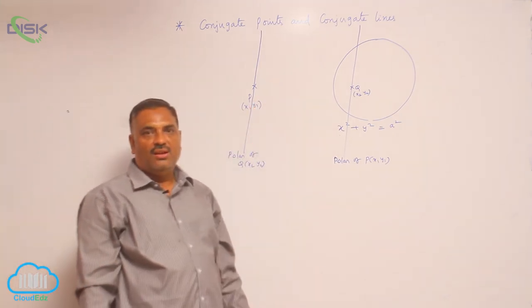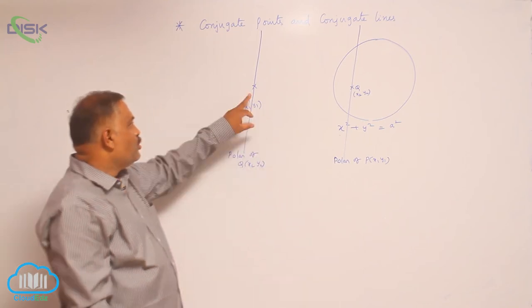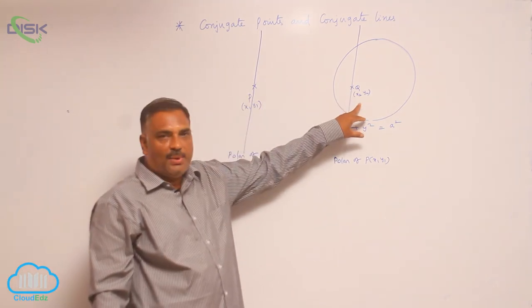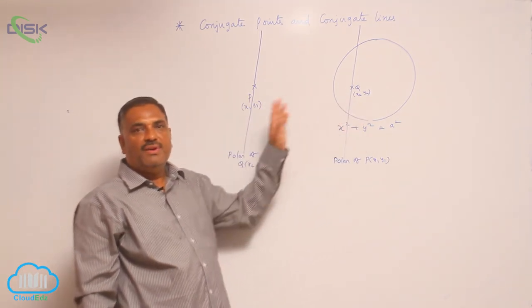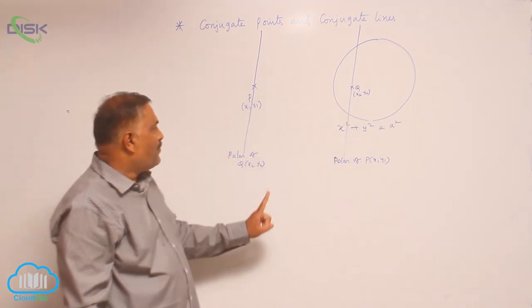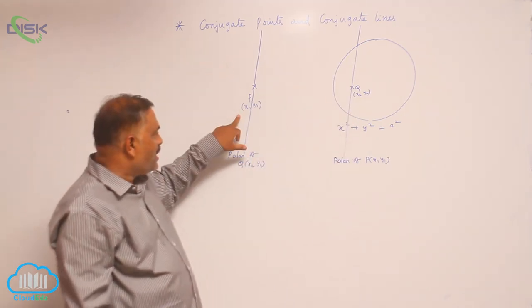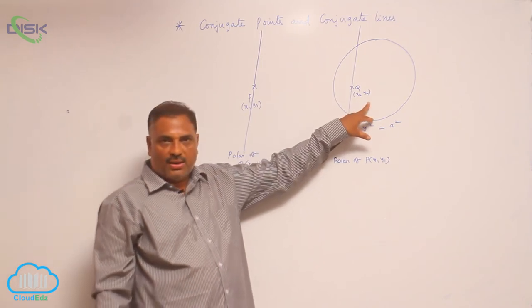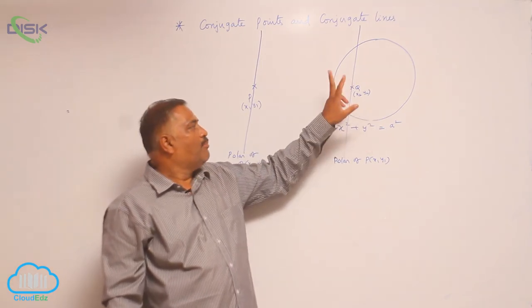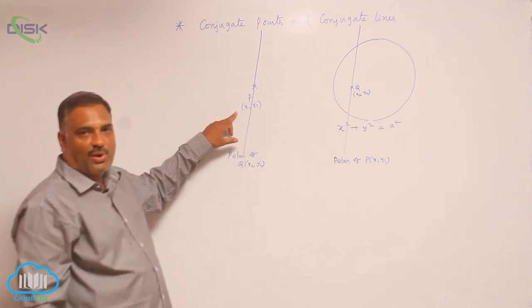Now, we will come to the definition of conjugate points. Two points are said to be conjugate points with respect to a circle if polar of first point passes through the second point and polar of second point passes through the first point.